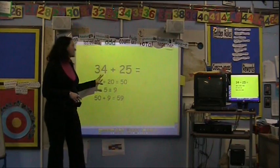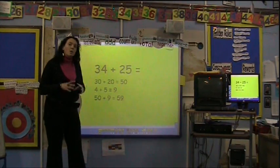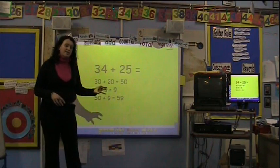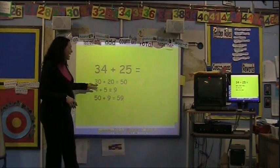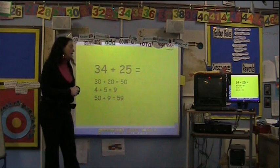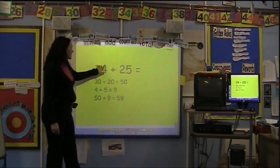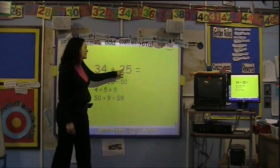So if we took the sum 34 add 25, what we would encourage children to do would be to add the tens separately to the units. So this is how we would set it out in a Key Stage 1 classroom. We would look at 34 as 30 and 4, and 25 as 20 and 5.